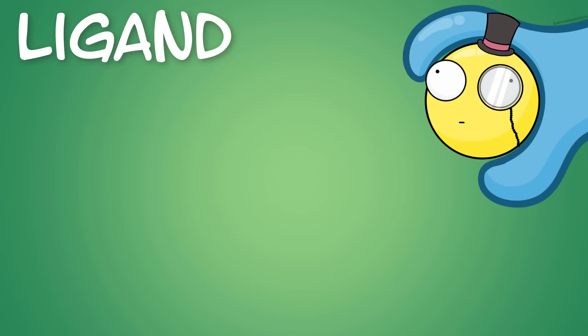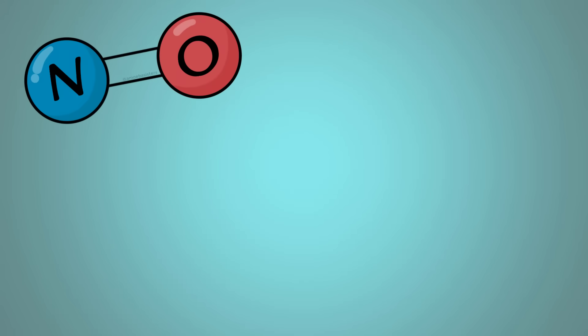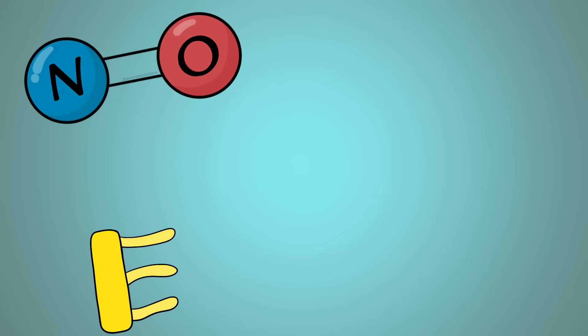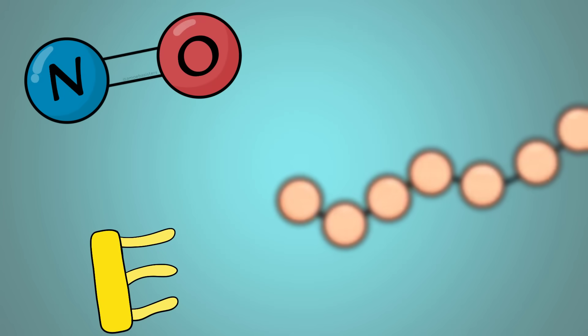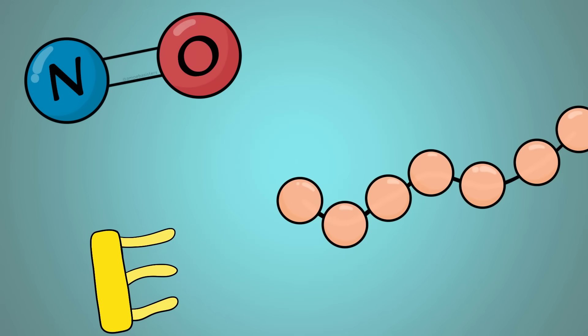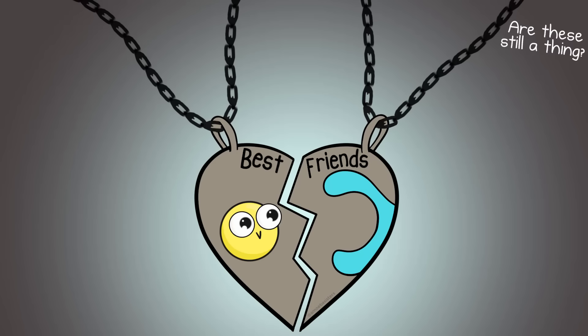Signal molecules can be a variety of things, such as gas molecules, hydrophobic biomolecules like lipids, or hydrophilic biomolecules like some kinds of proteins. Ligands are generally smaller than the receptors they bind, and ligands and receptors can have a very specific fit as well.